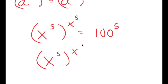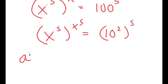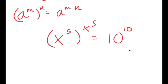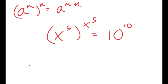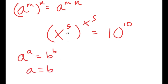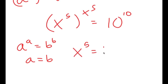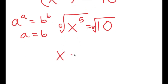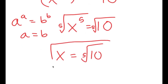Now, 100 I'm going to rewrite as 10 squared, so I have (10²)^5. Using the property a^(m·n), this equals 10 to the power of 2 times 5, which is 10 to the power of 10. Now, using the property that if a^a = b^b then a equals b, I have (x^5)^(x^5) = 10^10, meaning x^5 equals 10. To solve this, I take the 5th root on both sides: the 5th root of x^5 is x, so x equals the 5th root of 10. This is my solution.